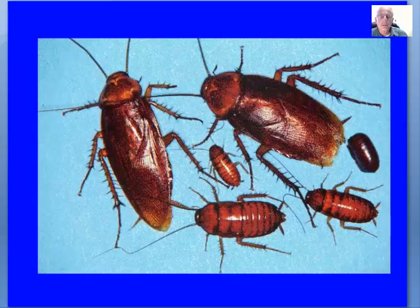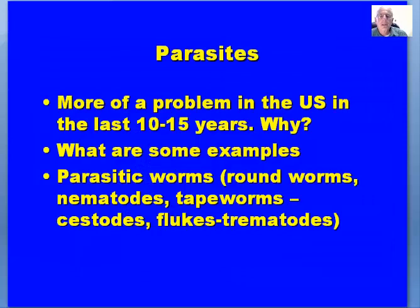Roaches are of major concern — if you've ever had roaches in your home, they're very difficult to control. Parasites are more of a problem in the US in the last 10 to 15 years. There are three major types of parasitic worms we deal with: roundworms — nematodes; tapeworms — cestodes; and flukes — trematodes.